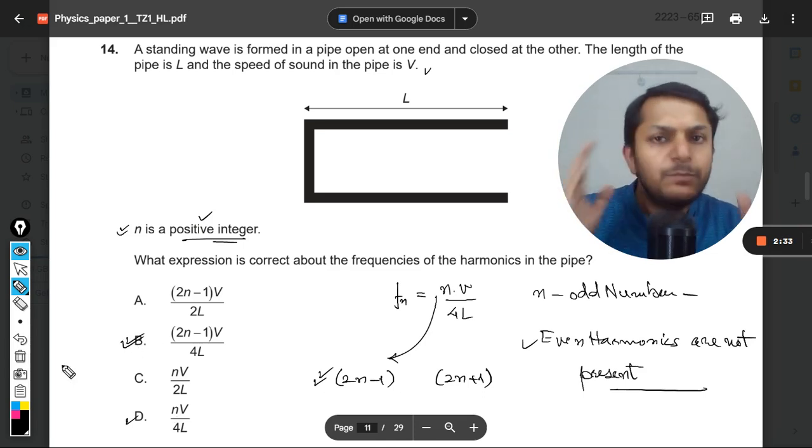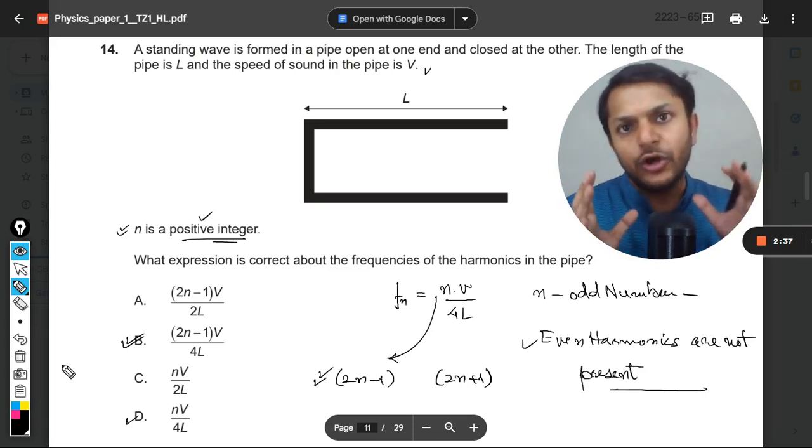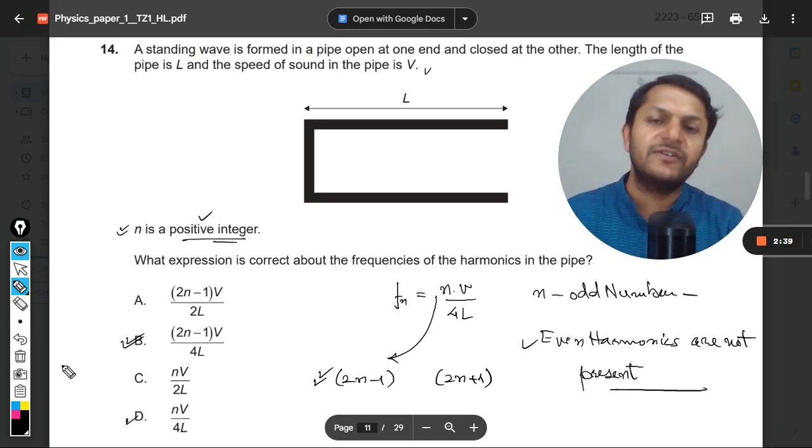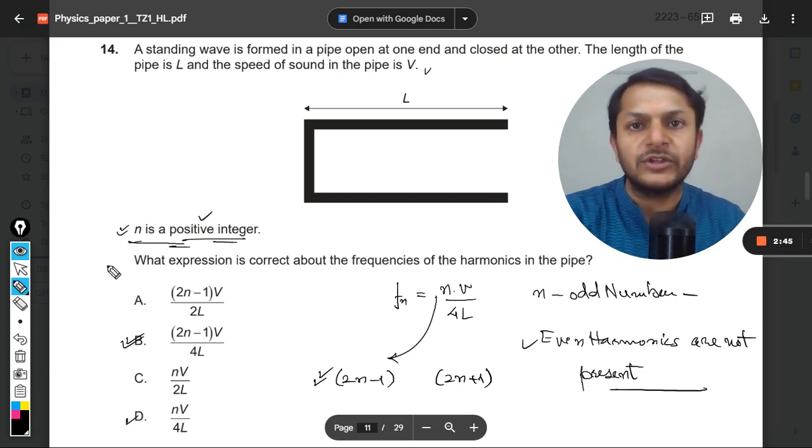And thereby B becomes the correct option. This is the correct explanation of why answer B should be selected instead of answer D. Do you got it? Because the problem is that N represents all positive integers in the question.